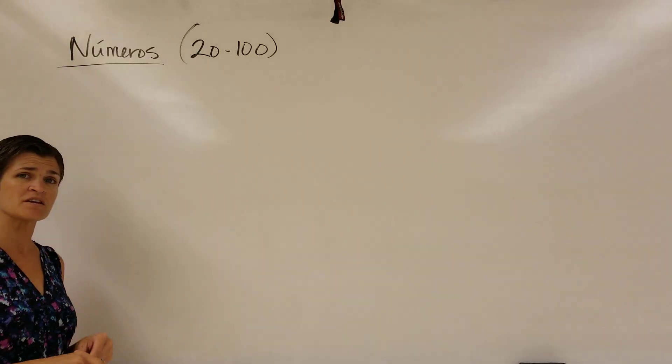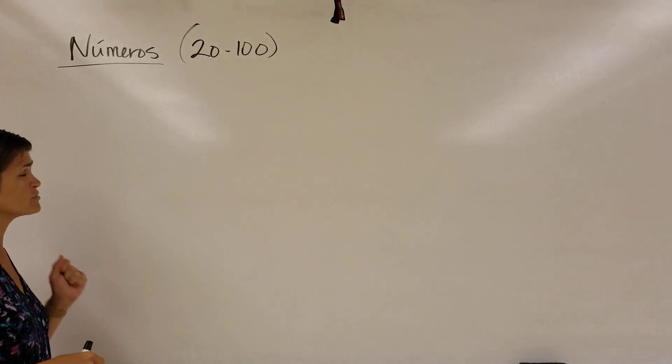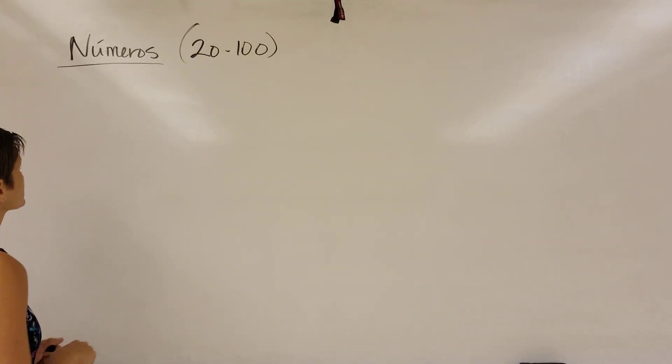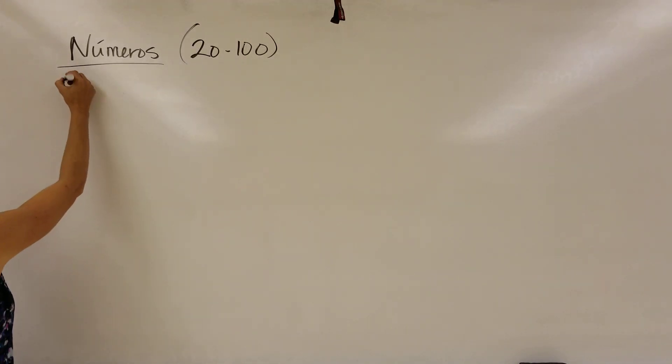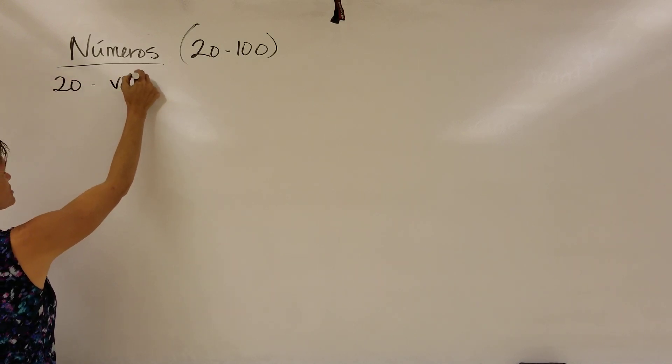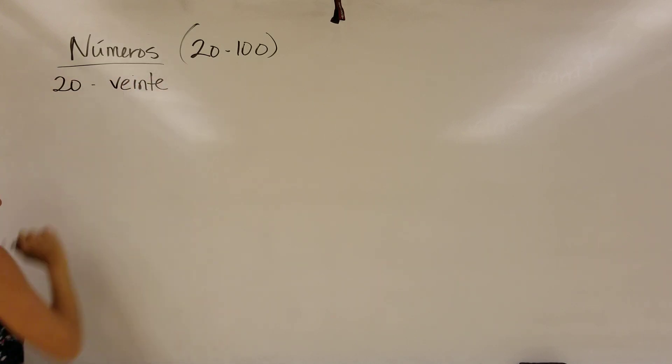All right, it's time to cover all the rest of the numbers. We did the numbers 1 through 20 in class, and we're going to get all the other numbers now. So we ended with 20, which was veinte, spelled like a vein in your arm.